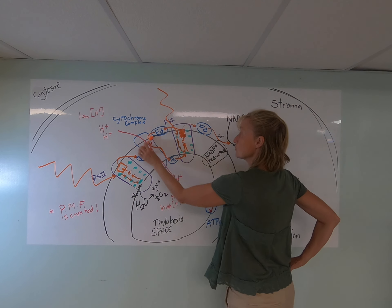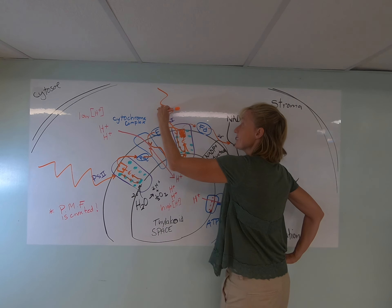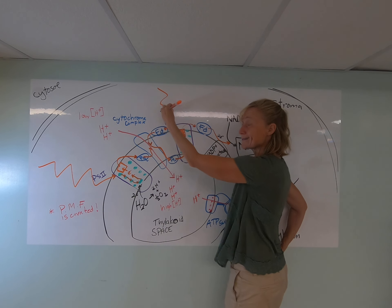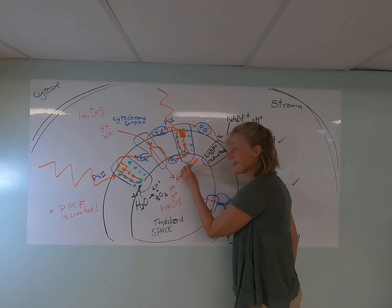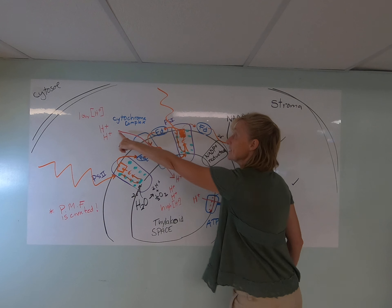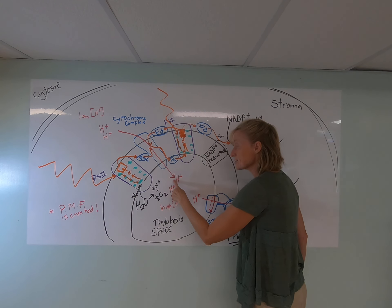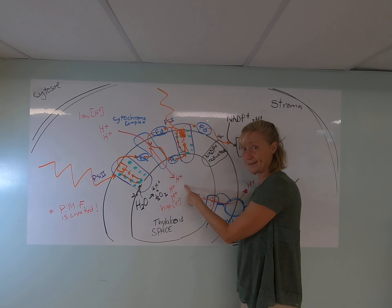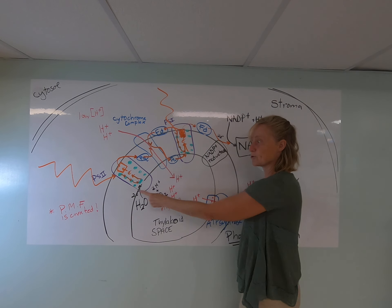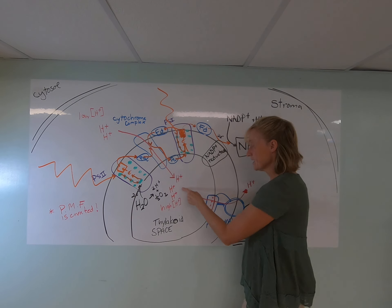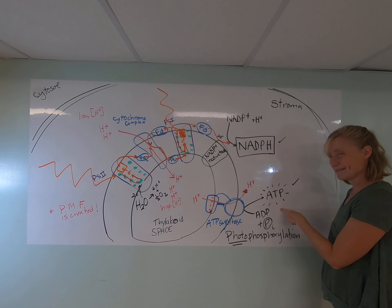Well, as these electrons are flowing in a circle, they're getting excited, they're falling back down, they're getting excited, they're falling back down. But guess what? As they fall back down, that releases some energy that allows protons to be pumped across the membrane, creating a bigger proton gradient or proton motive force that's used to drive the synthesis of more ATP.